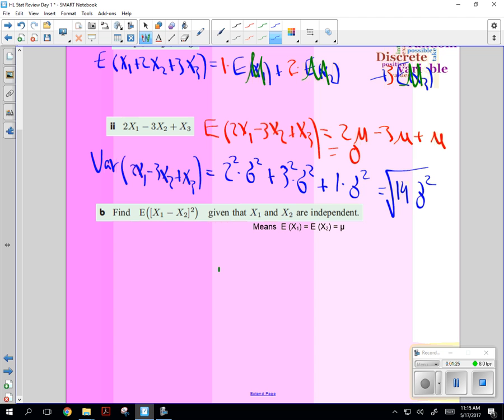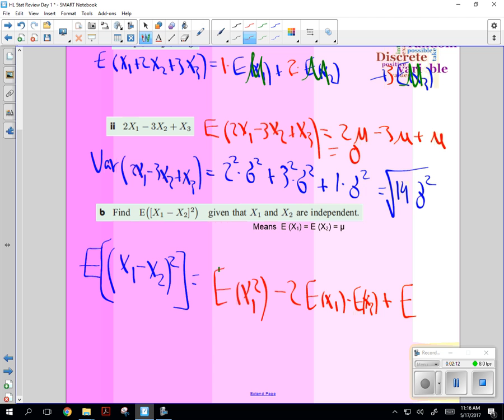Okay, so last one. It says find E of X₁ minus X₂ squared, given that X₁ and X₂ are independent. I wrote you a little hint. That means that E of X₁ equals E of X₂ equals μ. So we're going to start off E of X₁ minus X₂ squared, which is going to be equal to E of X₁² minus 2 E of X₁ times E of X₂ plus E of X₂².